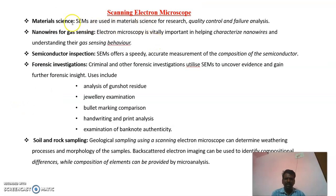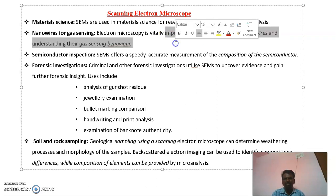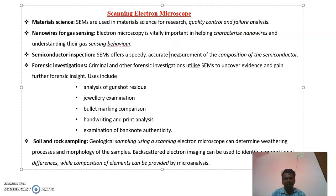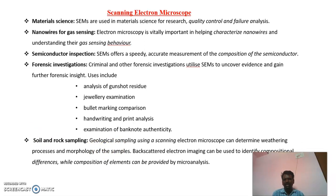The next topic is the applications. In material science, this scanning electron microscope technique is used for quality control, failure analysis, characterizing the gas sensing behavior of nanowires, and finding the composition of semiconductors. In forensic investigation, it can be used to analyze gunshot residue, examination of jewelry, bullet markings, and handwriting printing analysis. In geology, it is used to find the chemical composition and structure of micro solid materials.